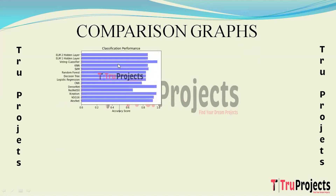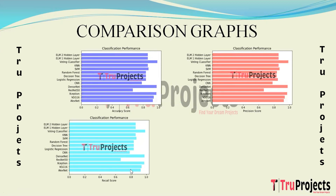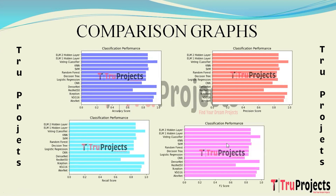Comparison graphs are presented using horizontal bar charts. The accuracy comparison graph shows accuracy scores on the x-axis and algorithm names on the y-axis, measuring overall correctness of predictions. The precision score graph measures how many predicted positives were actually correct. The recall graph measures the ability to identify all relevant instances. The F-score graph combines precision and recall into a single metric. The best-performing algorithm across all metrics is selected for predictions.